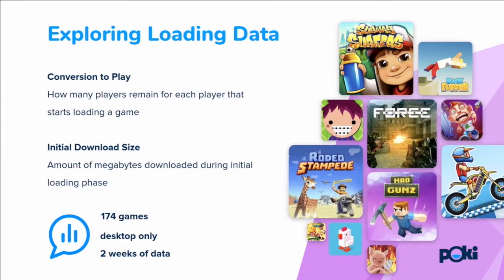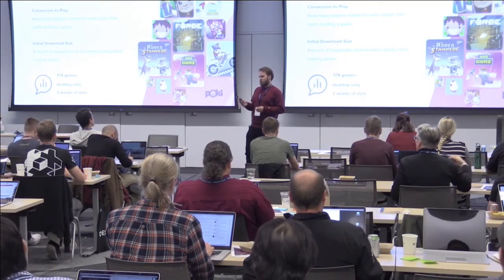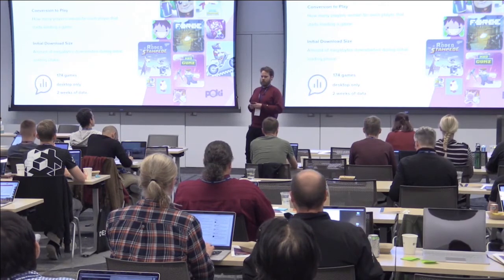On exploring loading data, I'm going to be looking specifically at two concepts, so it's important that we speak the same language. I'll be looking at conversion to play versus initial download size. Conversion to play means how many players remain for each player that starts loading a game. If 100 players start loading your game and 50 remain at the end of your loading screen, that means you have a conversion to play of 0.5 or 50%. I'm only talking about the initial load here — no post-loading, no onboarding, no platform drop-off. The initial download size is just the amount of megabytes downloaded in this period.